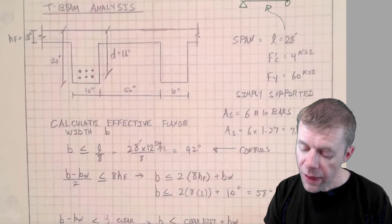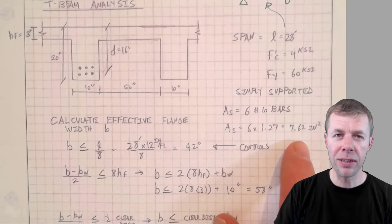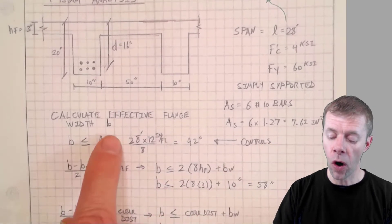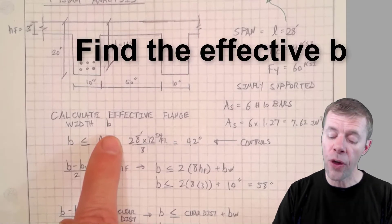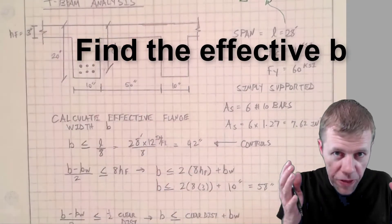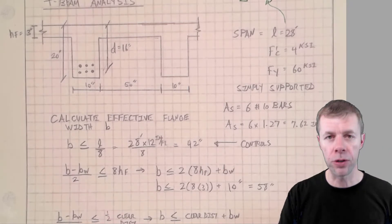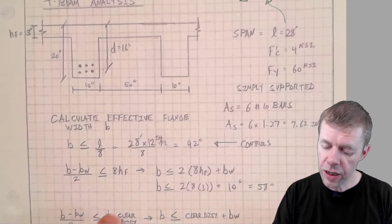These are number ten bars baby. That's a total amount of steel of 7.62 and now let's find our effective width. This is the width that we can count on. Not the total width that's there, it's the width that we can count on and we talked about that in the theory portion of the videos.